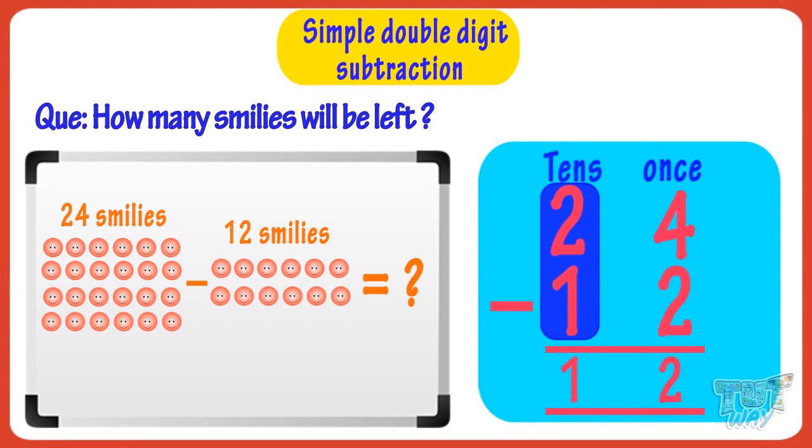Good! So we got 24 minus 12 equals 12. So 12 smileys will be left.